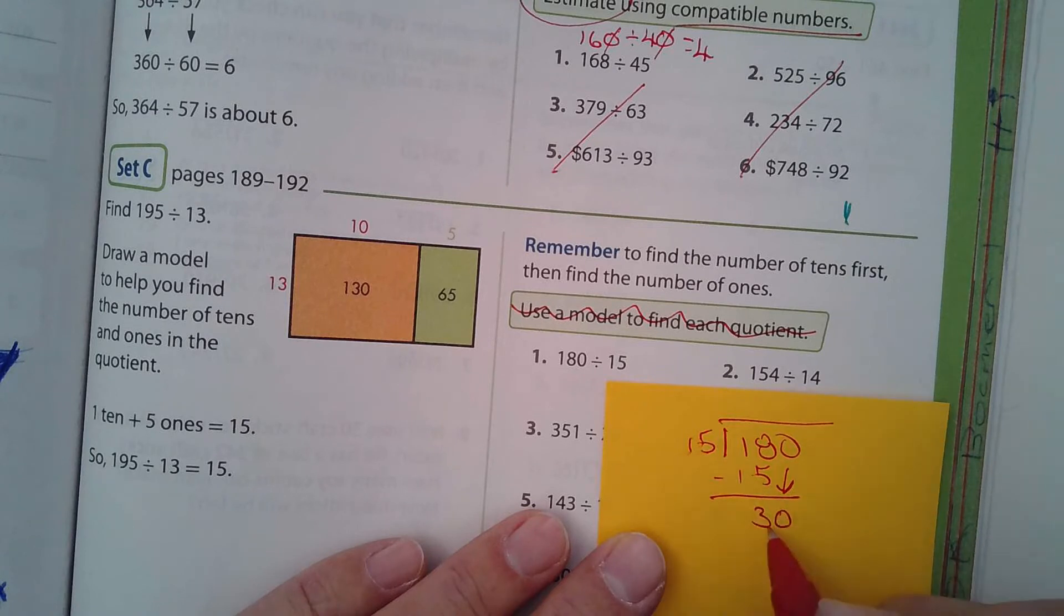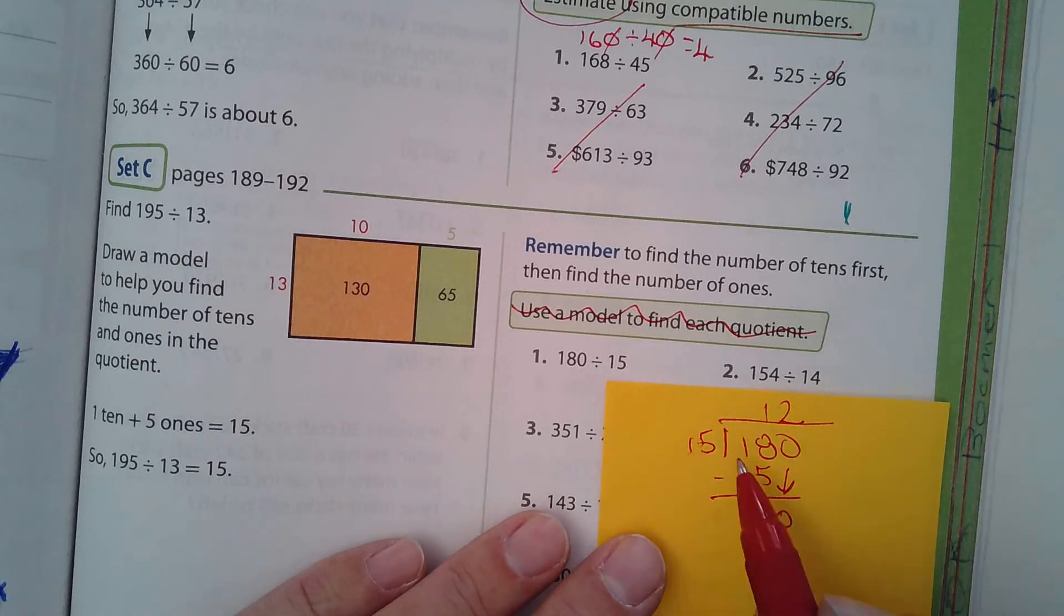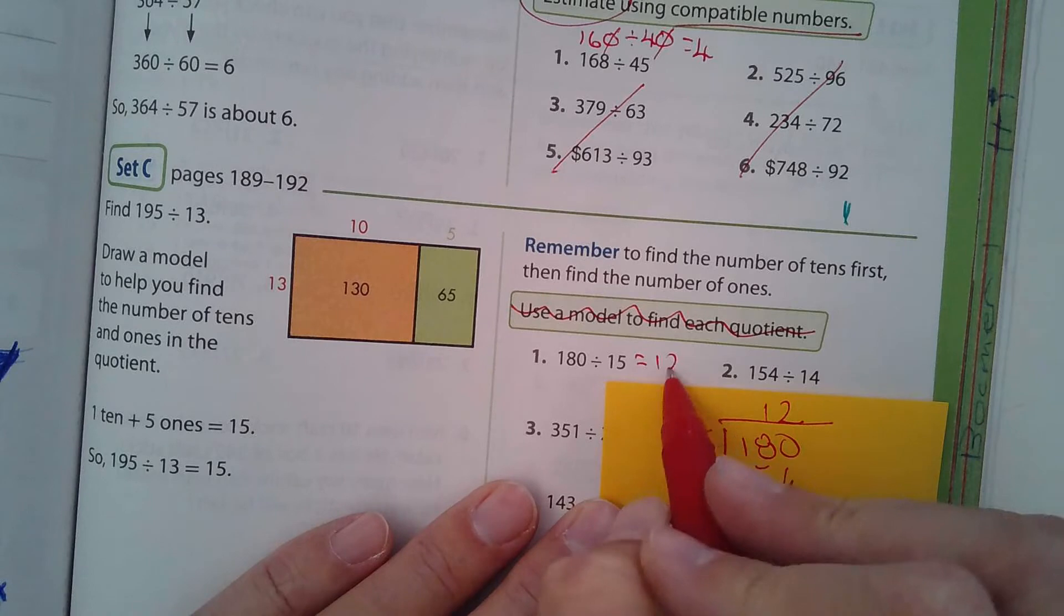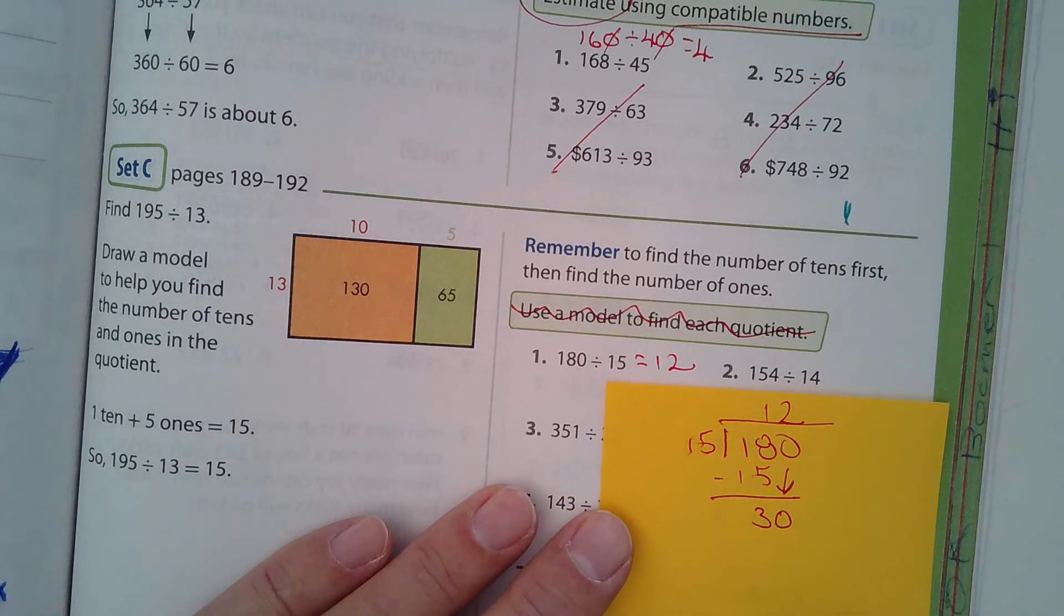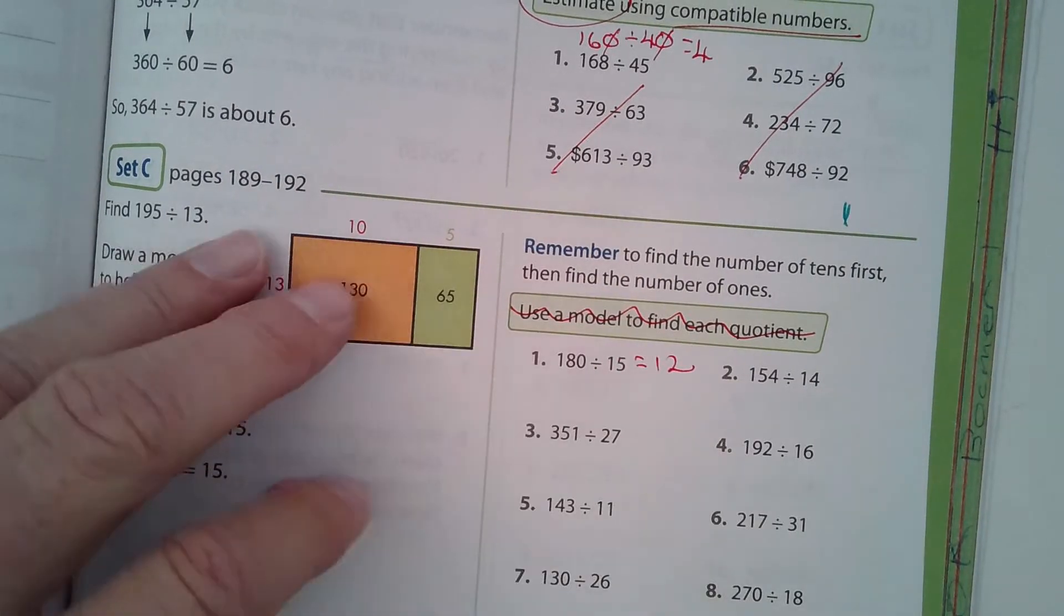So if you didn't follow me with that, watch. 15 from 18, there's three left over. I bring down the zero. 15 goes into 30 twice. The answer is 12. So some of these you can just do in your head. And that was an example of just doing one in your head.